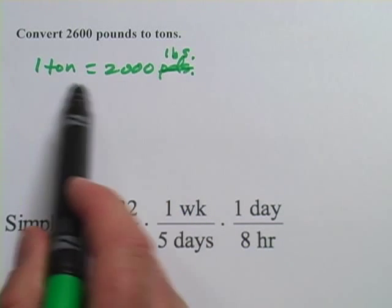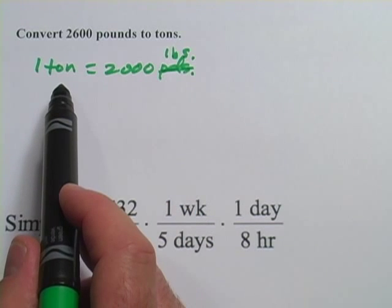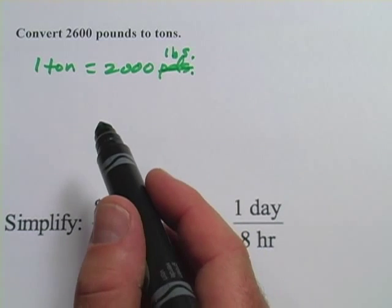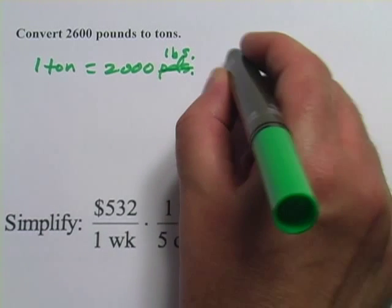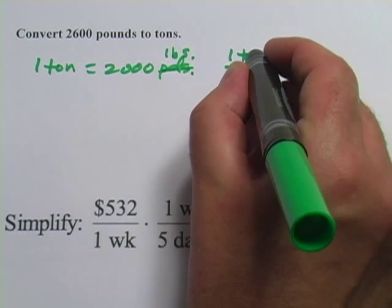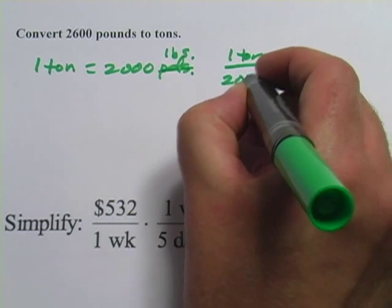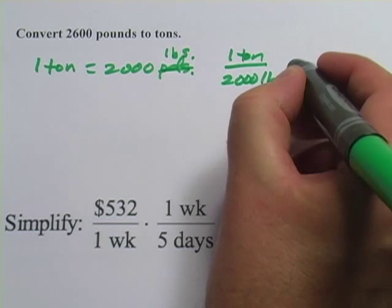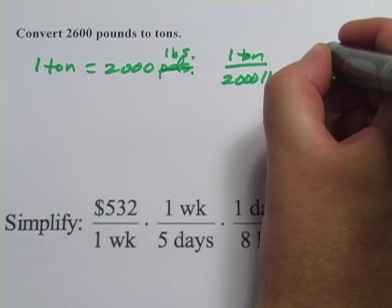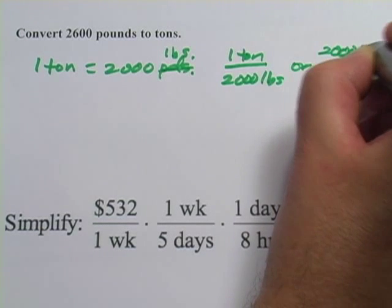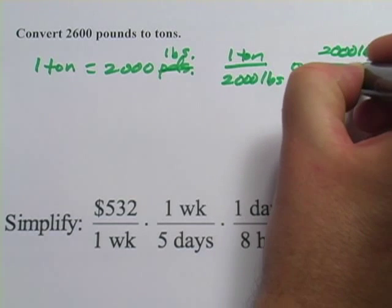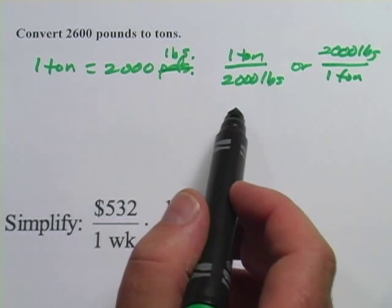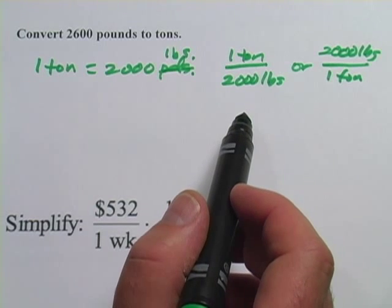What we can do with this fact is turn it into a unit multiplier, which looks like a fraction. You can have one of two forms: you can put the tons on the top and the pounds on the bottom, or you can put the pounds on the top and the ton on the bottom. Either one is correct and you'll just pick which one makes most sense to use in the particular problem.